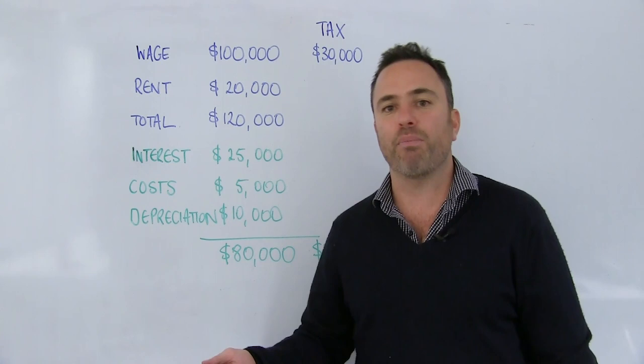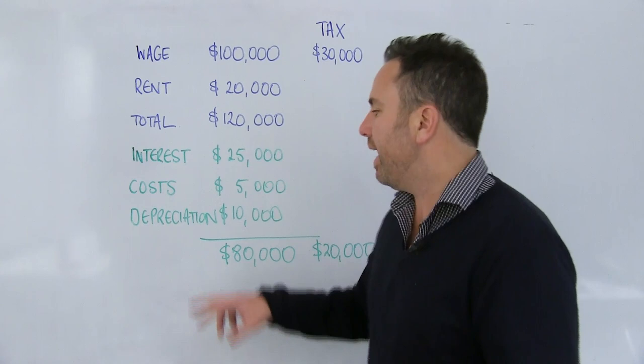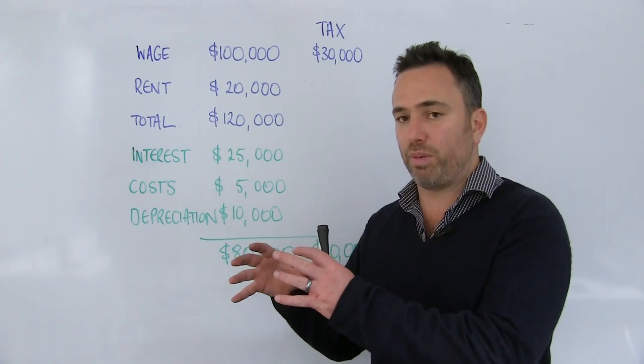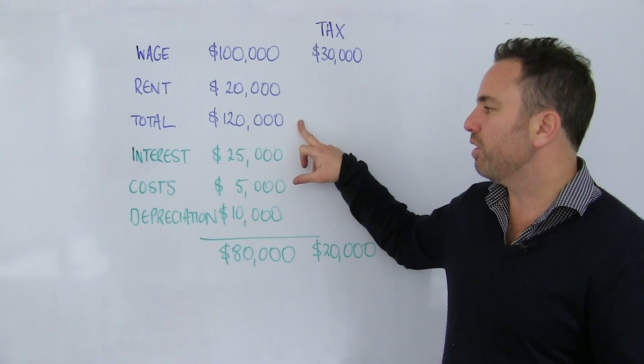And then we've also got depreciation. These are real costs actually coming out of our pocket, but depreciation is a paper-based expense — an expense associated with the wear and tear or the write-down in value of the actual property. There are two types of depreciation: capital depreciation and depreciation on fixtures and fittings within the property. In this example, I've used $10,000.